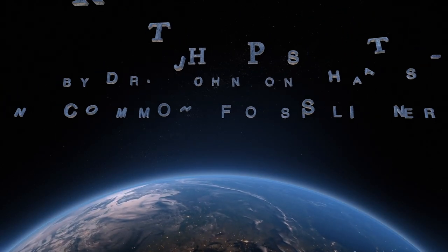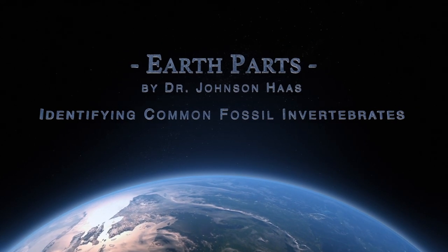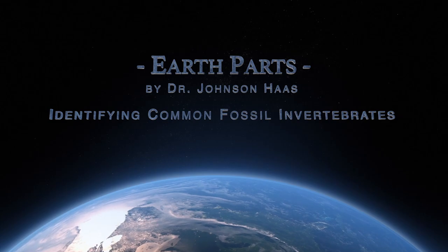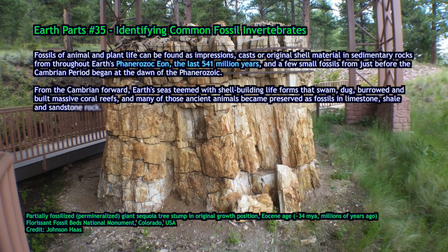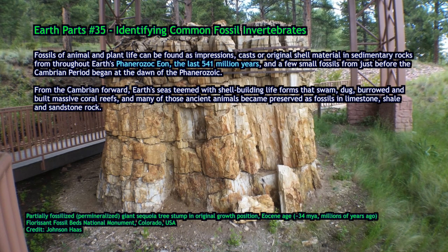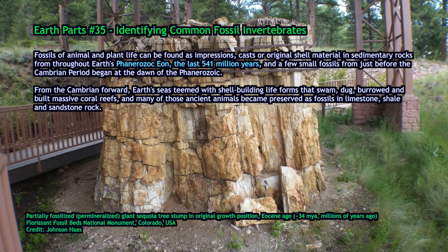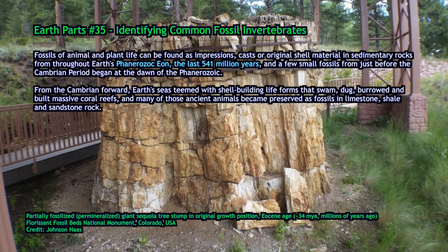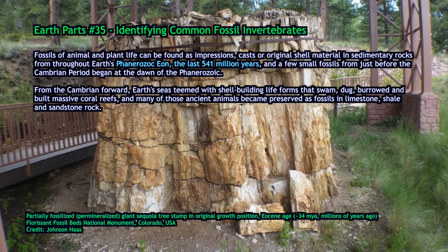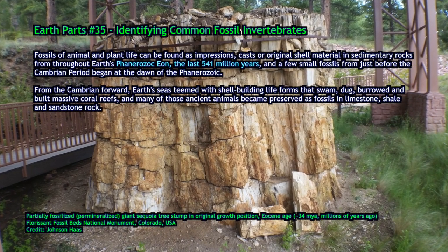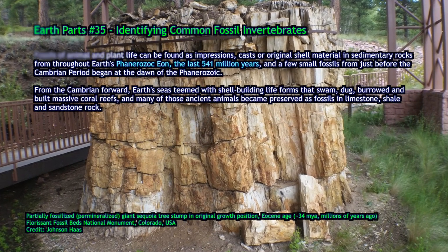Hi, I'm Dr. Johnson Haas, and welcome to Earth Parts, a free educational netcast bringing geology to all. In this episode, I want to talk about fossil identification — how to recognize a fossil and try to determine, based on looking at it, what kind of organism it was in life. Whether it was a sponge, trilobite, coral, fish, plant, or one of many other forms of ancient life preserved in sedimentary rock. It's not going to be comprehensive, but I want to talk about some of the major groups of fossils that are most commonly found.